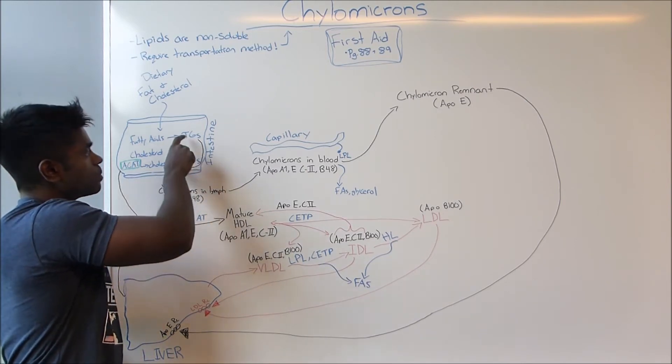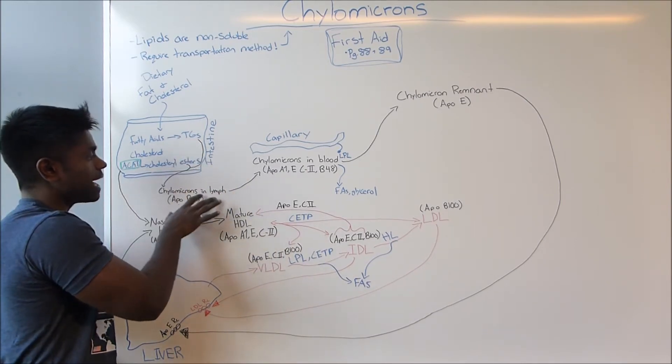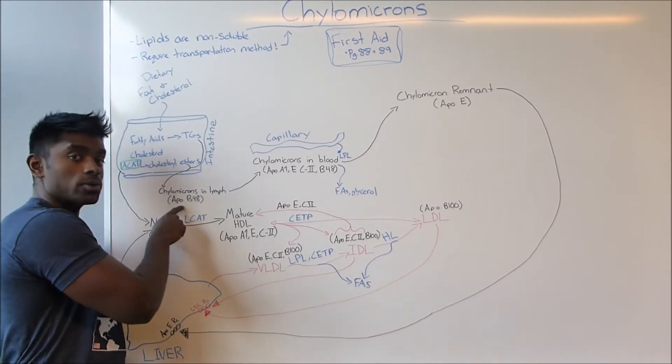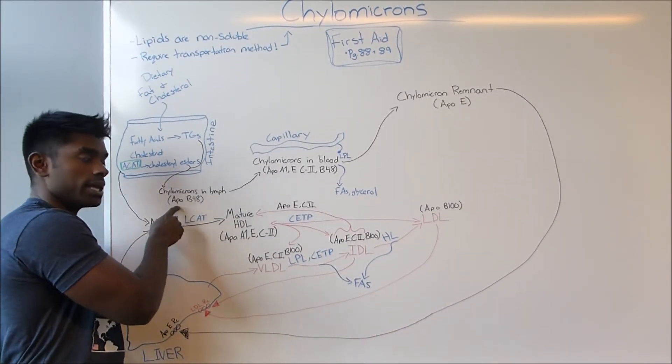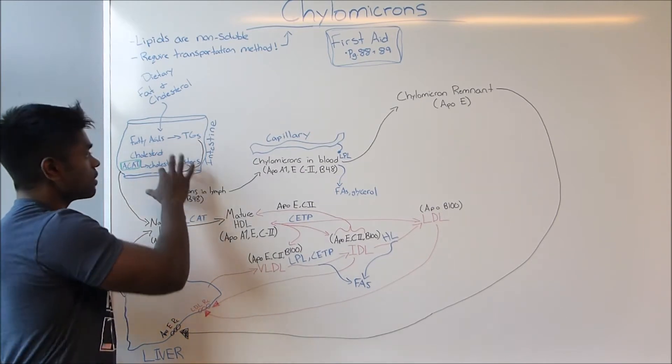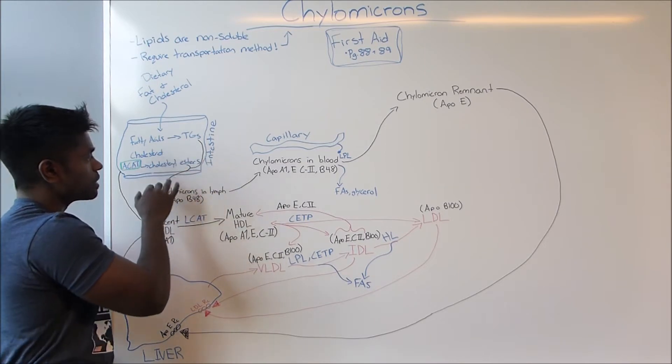These two products can then form into chylomicrons. As we can see, we have an apolipoprotein here called ApoB48. This protein is important because this is what allows this chylomicron to be released from the intestines.